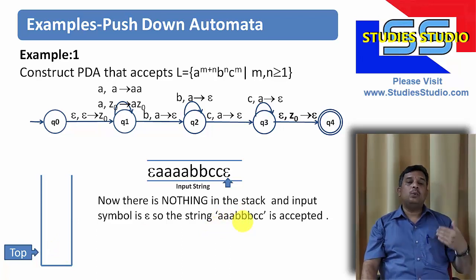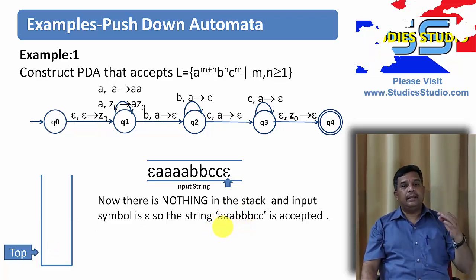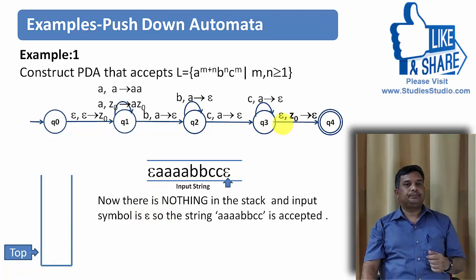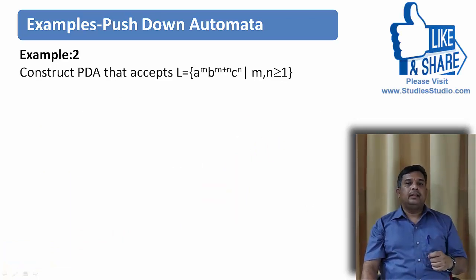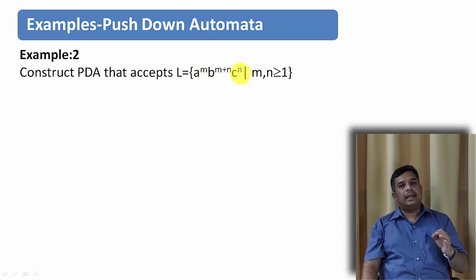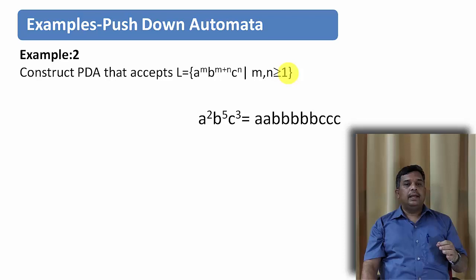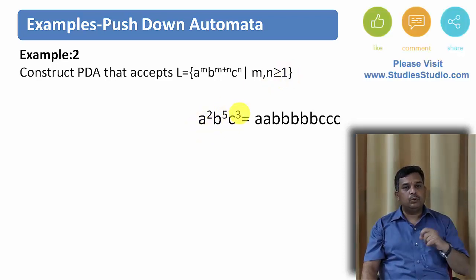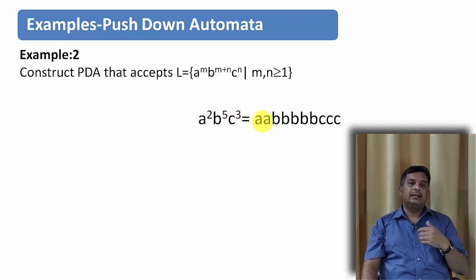Now you know how we constructed the PDA for a to the power m+n, b to the power n, c to the power m. Let us take one more example: construct a PDA for the language a to the power m, b to the power m+n, c to the power m, where m and n are greater than or equal to 1. An example string would be a-squared b to the power 5 c-cubed — two a's followed by five b's and three c's.